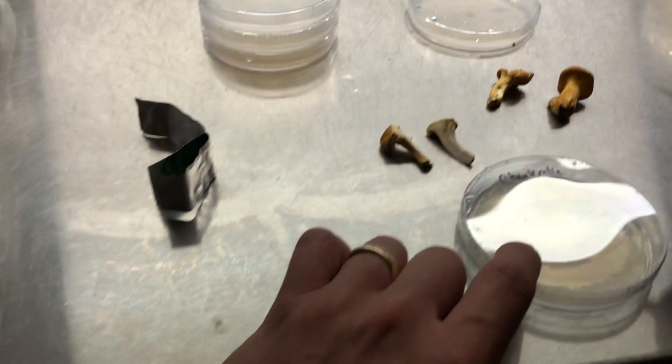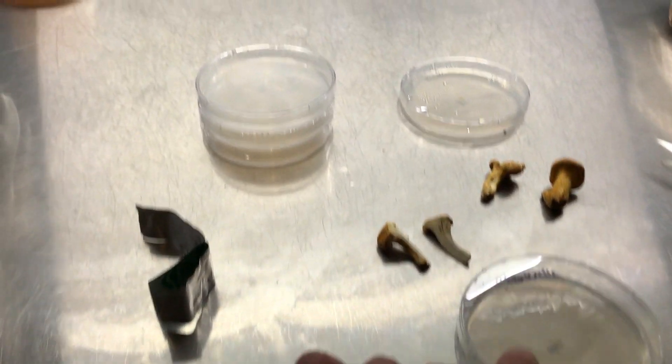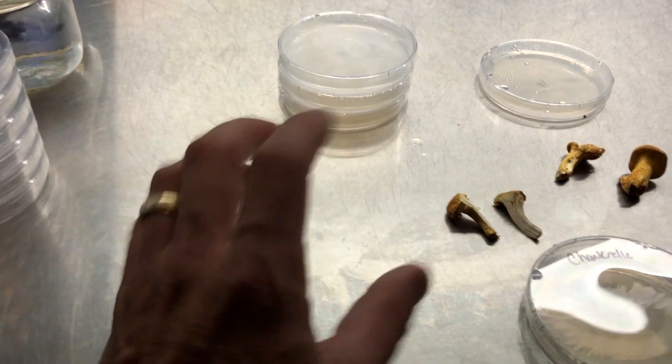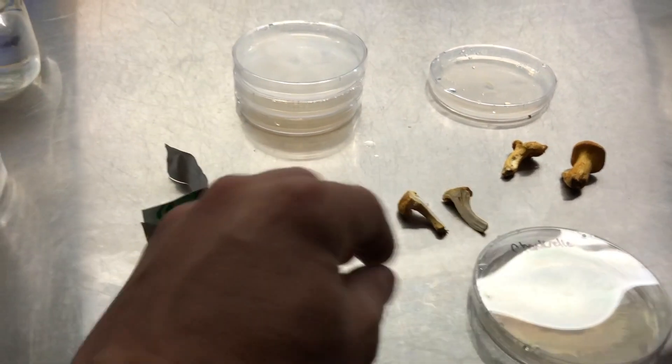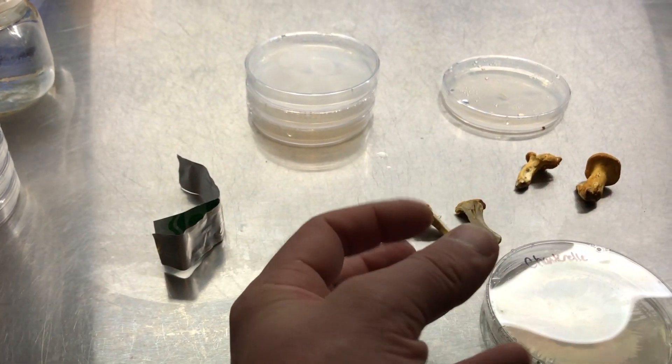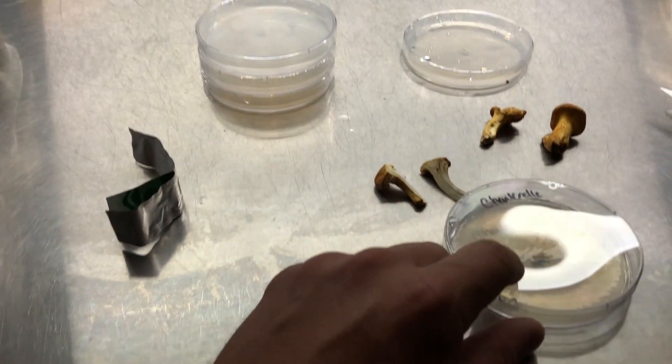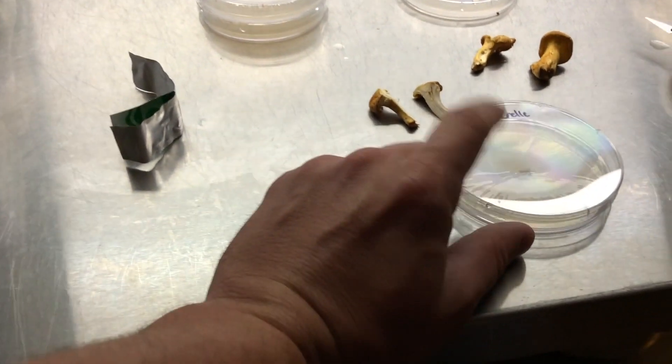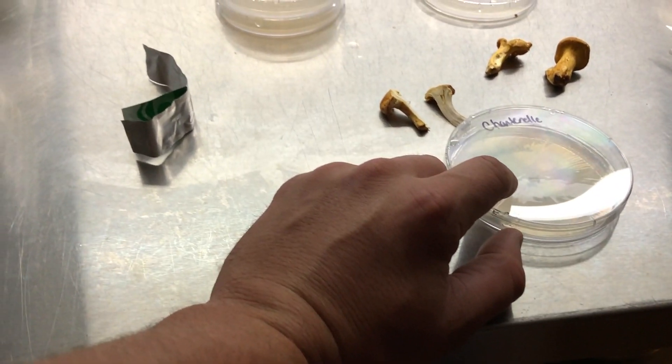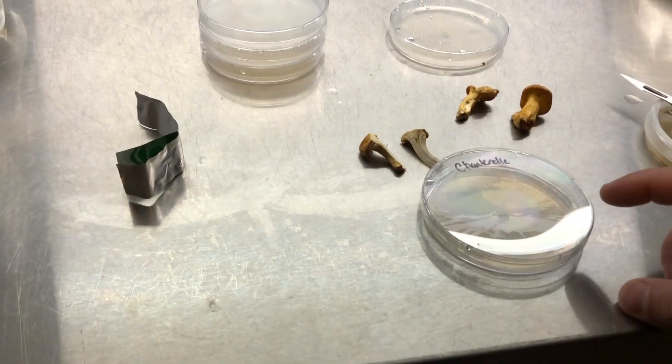There will be enough moisture content that this mycelium will start to spread out, and then you can take a piece of that mycelium and transfer it onto MEA or a slant for longer term storage. That's one of the uses of water agar. I've definitely been able to save some really rough looking tissue using this technique.